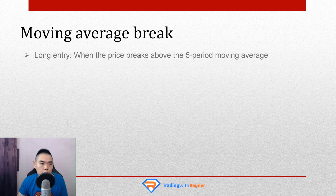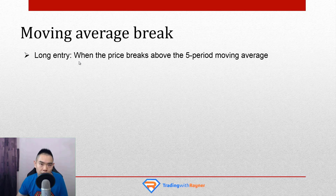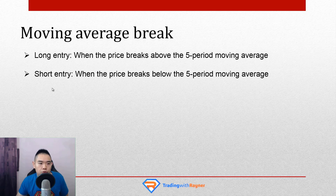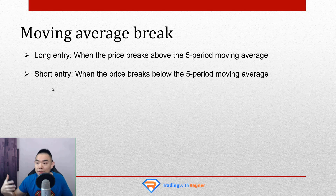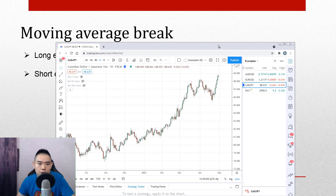The rules you can use are: for a long entry, you can enter when the price breaks above the five-period moving average. For a short entry, you can enter when the price breaks below the five-period moving average. One thing to be clear is that this entry trigger, like the candlestick pattern, is not meant to be used in isolation — it's meant to be used within the context of the market: market structure, area of value, and then finally, look at the entry trigger.